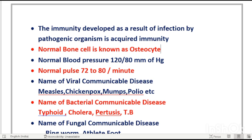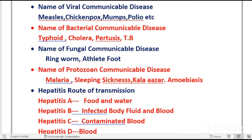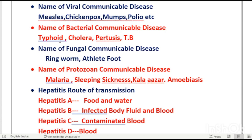Name of viral communicable diseases: measles, chicken pox, mumps, polio. Bacterial diseases: typhoid, cholera, pertussis, TB. Fungal diseases: ringworm, athlete's foot. Protozoa diseases: malaria (caused by Plasmodium, spread by female Anopheles mosquito), sleeping sickness, kala-azar, amoebiasis. Regarding hepatitis routes: hepatitis A and E are water-borne; the rest are spread by blood and body fluids.